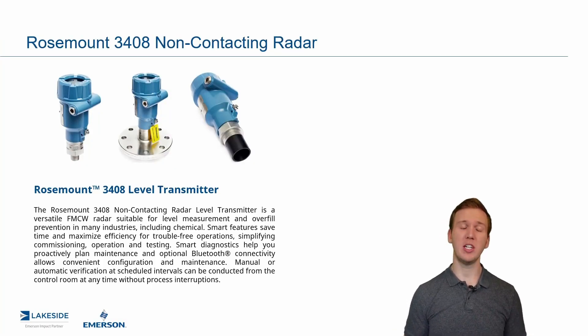In today's episode, we're continuing our discussion about Rosemount's 3408 non-contacting radar level transmitter. In this episode, we're going to talk through the differences between pulsed non-contacting radar and FMCW non-contacting radar.